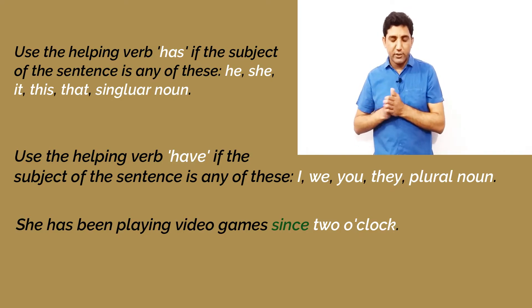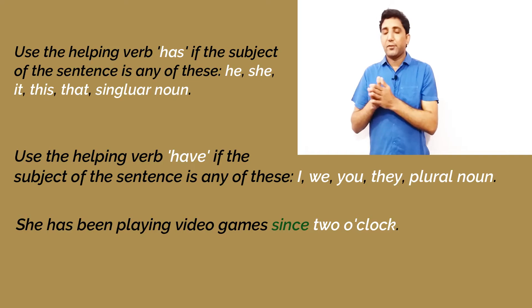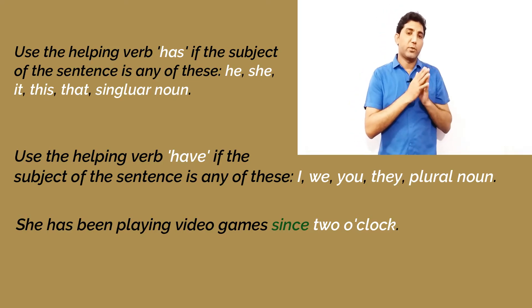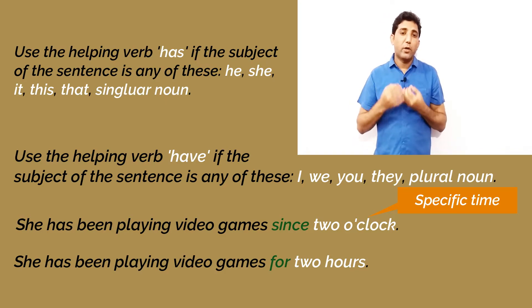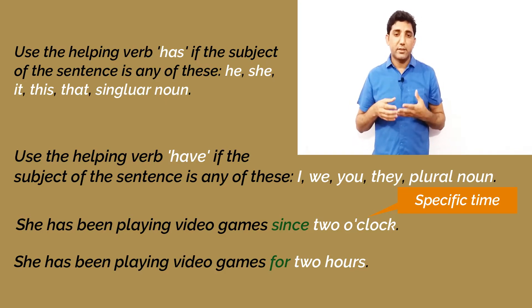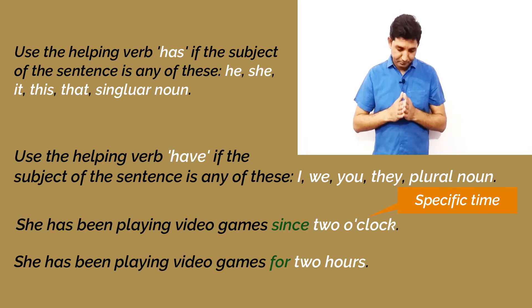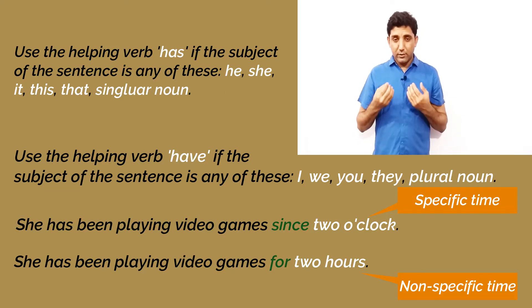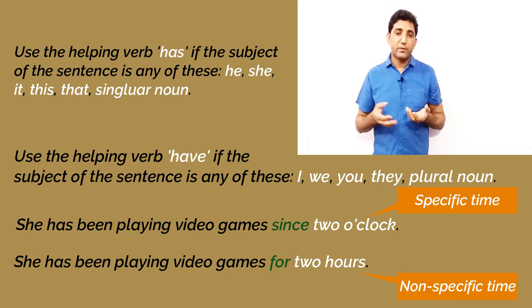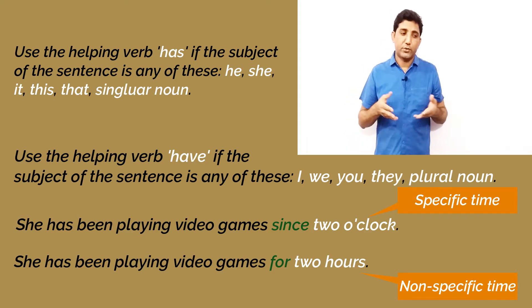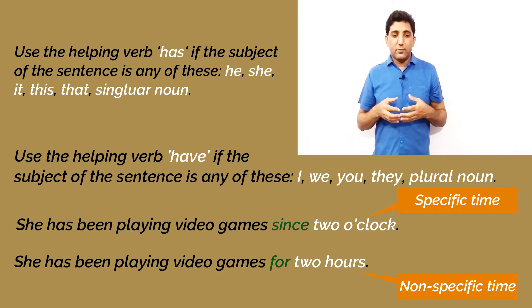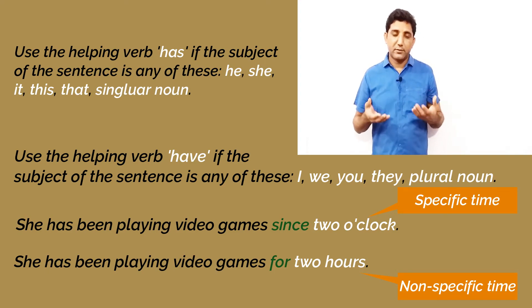Let's have the first example with the subject 'she'. She has been playing video games since two o'clock — that's a point in time when she started. If we talk about a period of time, the sentence can be: she has been playing video games for two hours, for three hours, or for four hours. We are talking about the duration, not a specific time.